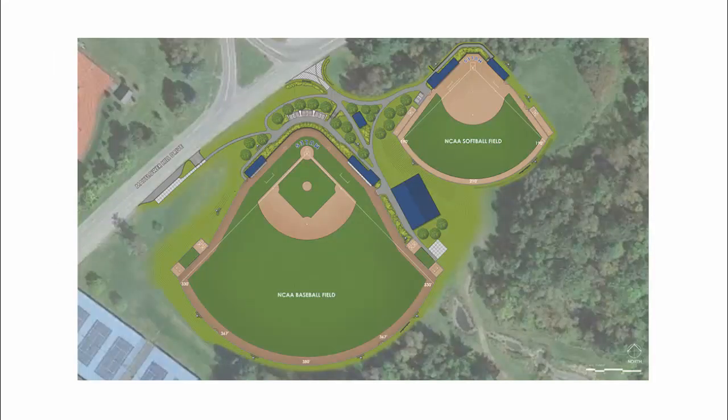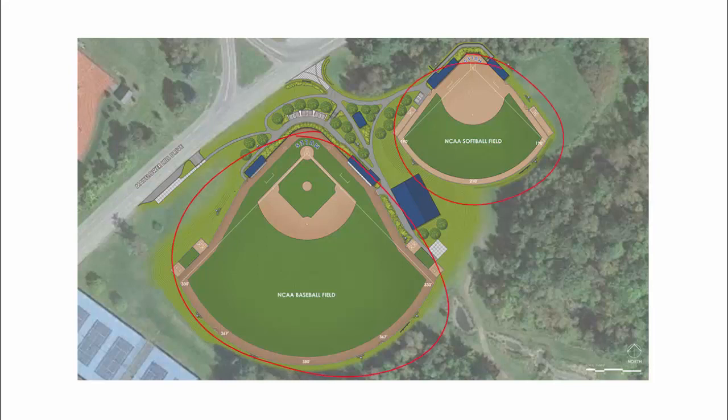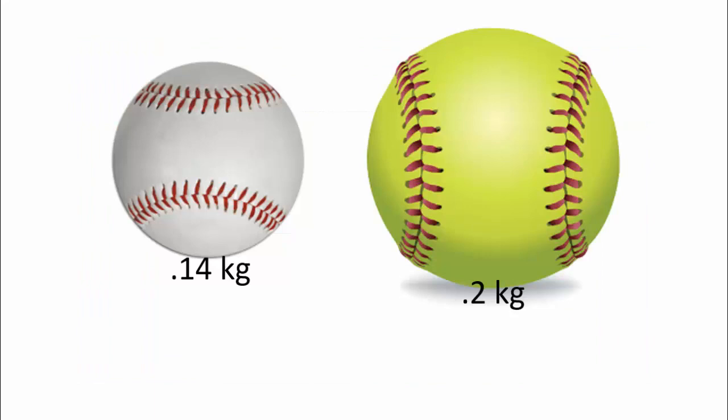When we compare the size of an NCAA baseball field to an NCAA softball field, you can see that the baseball field is a lot larger, and the reason for that is the same person hitting a baseball and a softball will hit the baseball much further. But why? Well, a baseball has a mass of 0.14 kilograms, where a softball is a little bit heavier. It has more mass. So its mass is 0.2 kilograms.